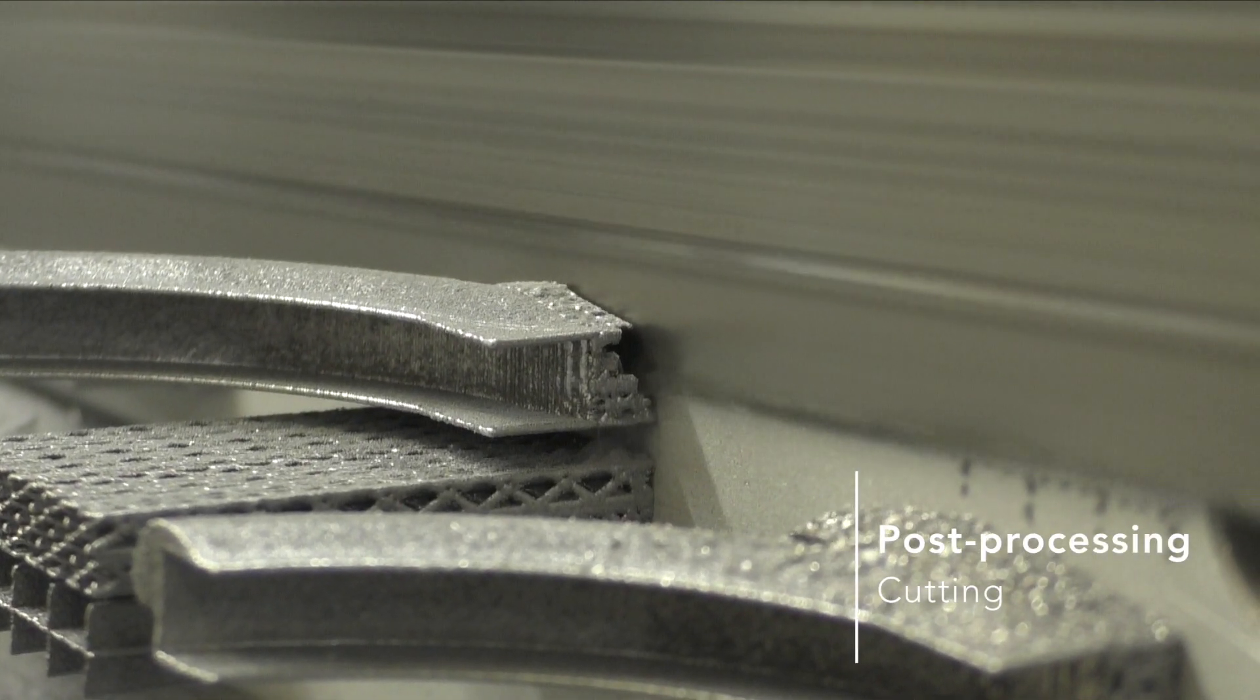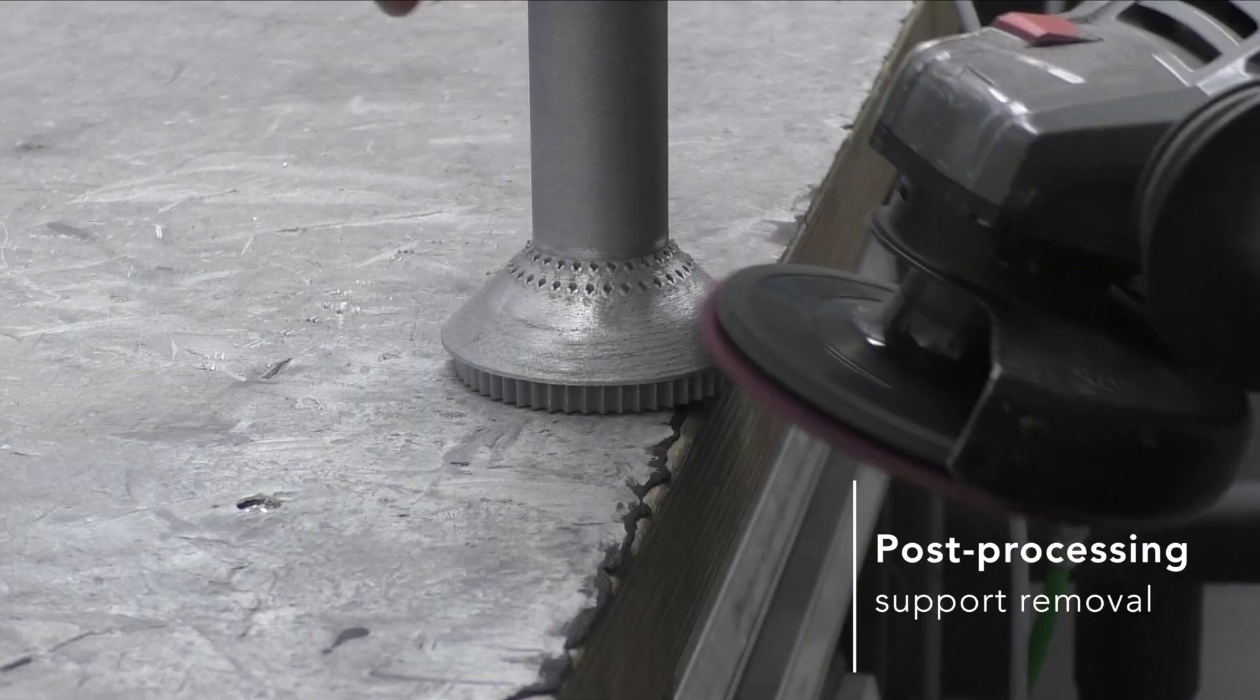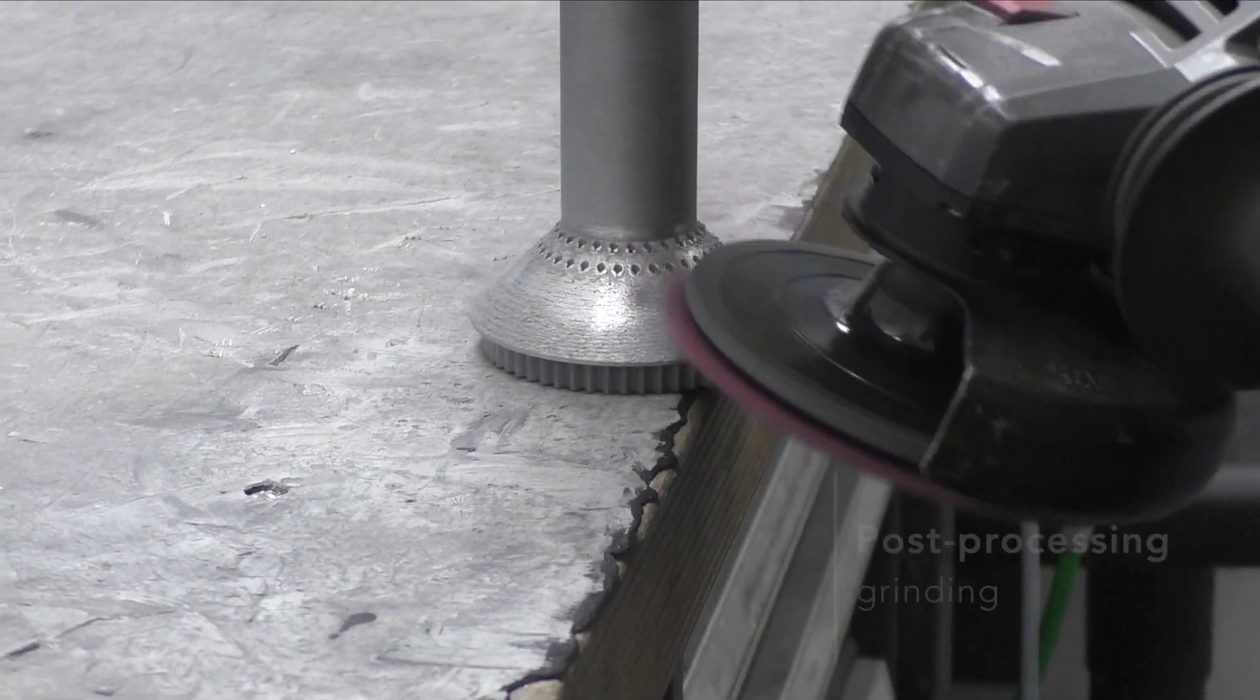In post-processing, all powder residues are removed. The parts get separated from the base plate as well as the attached support structures that were needed for metal printing.